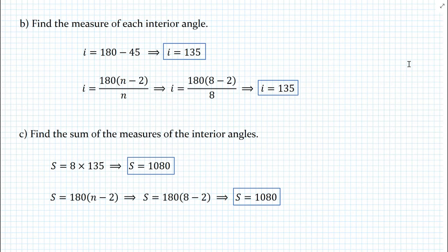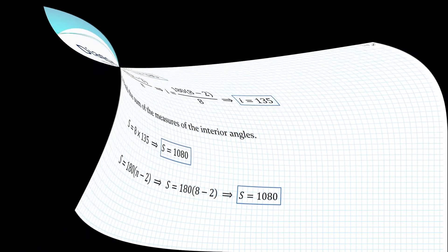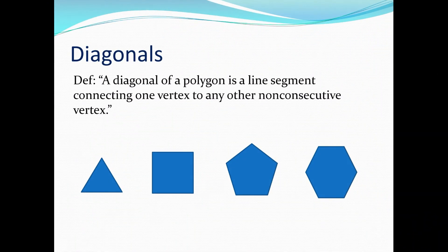Now let's look at the relationship between diagonals and the number of sides of polygons. First, let's define 'diagonal.' A diagonal of a polygon is a line segment connecting one vertex to any other non-consecutive vertex. Non-consecutive means they cannot be adjacent, because then you'd get the side of the polygon itself. For example, looking at the triangle: how many diagonals can we draw? The answer is zero — we cannot draw any diagonal inside a triangle.